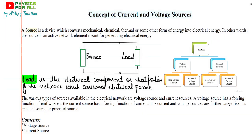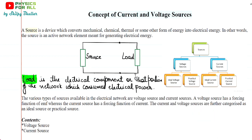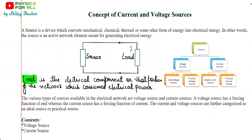Source provides everything required for generating electrical energy in the entire circuit. On the other hand, we have load. Load is something which would use that electrical energy provided by source. Source is providing the energy and load is using or consuming that electrical energy. Load is the electrical component or that portion of the network which consumes electrical power. You can say that this load could be your appliances — all the switches, appliances, whatever runs in the circuit, they all make up the load.